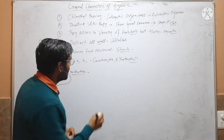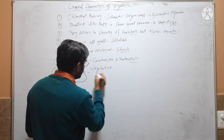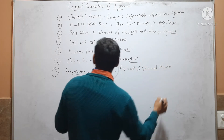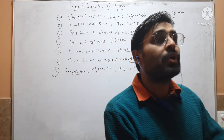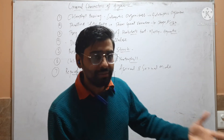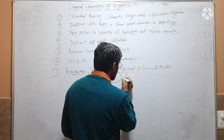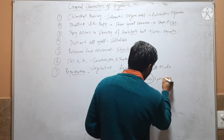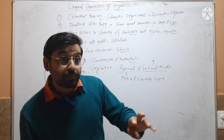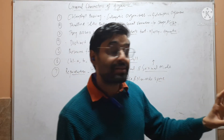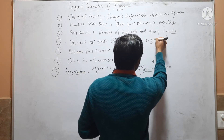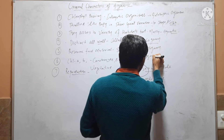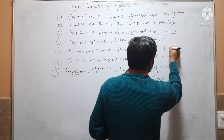Seventh, reproduction in algae occurs through vegetative, asexual, and sexual modes. Vegetative reproduction occurs by fragmentation, hormogonia formation, or fission. Asexual reproduction occurs through motile and non-motile spores. Sexual reproduction is of three types found in algae: isogamy, anisogamy, and oogamy.